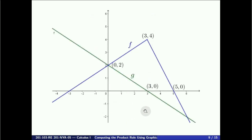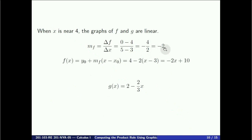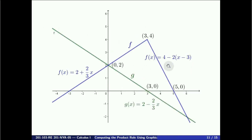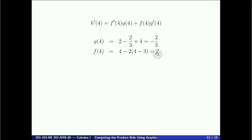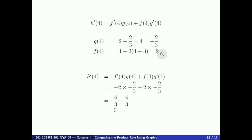To compute the derivative of h at x equals 4, the same method applies, but now we need the rule for f when x is greater than 3. Taking points (3, 4) and (5, 0) gives a slope of minus 4/2 equals minus 2, and in point-slope form y equals 4 minus 2(x minus 3), or equivalently y equals minus 2x plus 10. Computing g of 4 and f of 4 gives values of minus 2/3 and 2 respectively, with derivatives minus 2/3 and minus 2. Plugging those values into the product rule formula gives h prime of 4 equals 0, which might indicate a local max, local min, or inflection point at x equals 4.